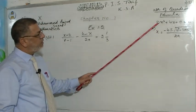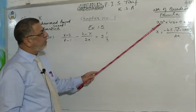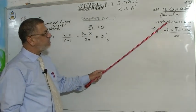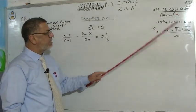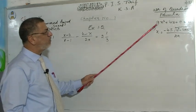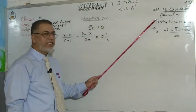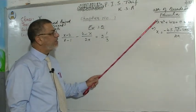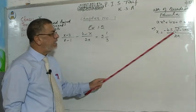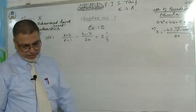As you can see from the previous lecture, the coefficient of x² is a, the coefficient of x is b, and the constant is c. You will find the values of a, b, c from the standard quadratic equation, and then use these values in the formula to directly find the answer.